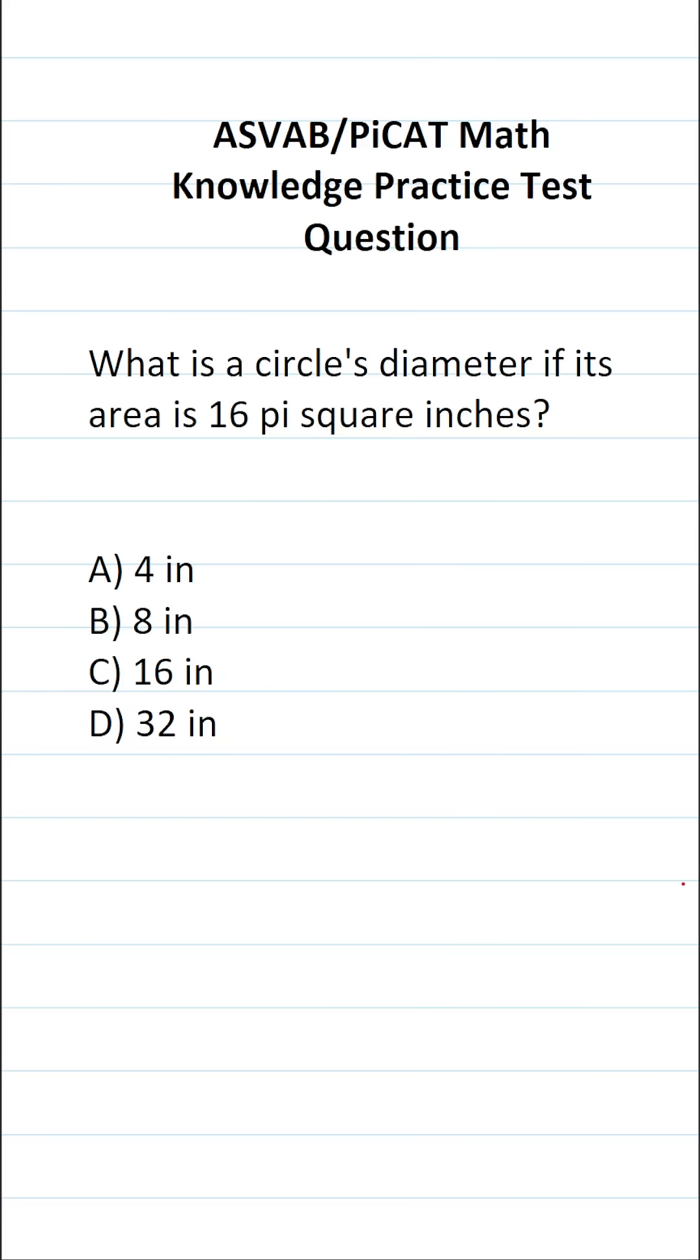Now, for this one, we have to know two formulas. First, we have to know how to find the area of a circle. That's pi r squared.